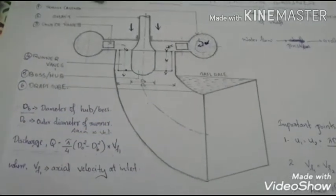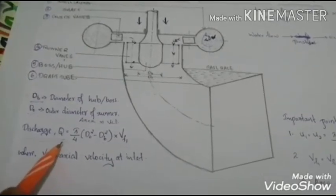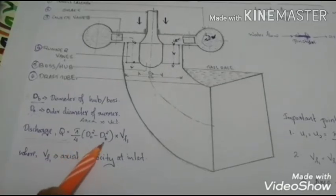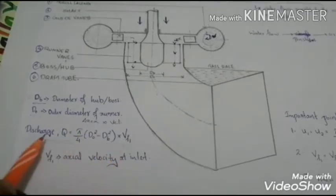The discharge of the draft tube is calculated using the expression QE equal to π/4(DO² - DB²) × VF1. That's area and velocity as you all know.